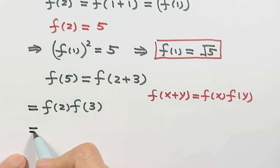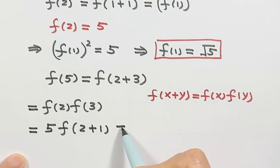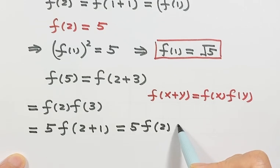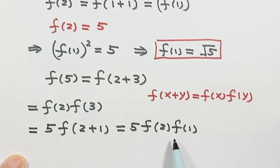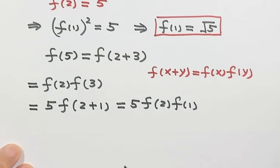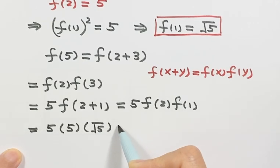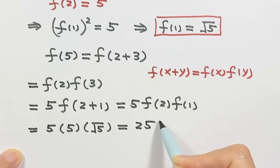Then f(3) equals f(2+1). Again based on the given condition, that's f(2) times f(1). For f(1), we figured out that's square root of 5. f(2) is 5 also. Then this one is 5 times square root of 5. So that's why the answer is 25 square root of 5. So that is the answer for this question.